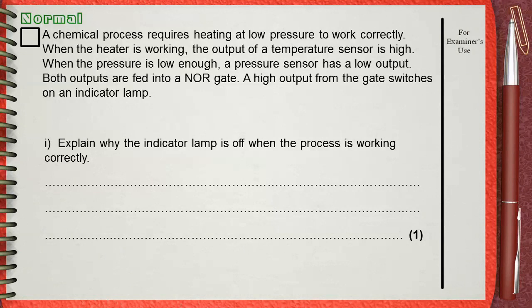A chemical process requires heating at low pressure to work correctly. When the heater is working, the output of a temperature sensor is high. When the pressure is low enough, a pressure sensor has a low output. Both outputs are fed into a NOR gate. A high output from the gate switches on an indicator lamp.